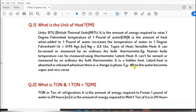Types of heat: Sensible heat can be sensed or measured by an ordinary dry bulb thermometer, for example, human body temperature can be measured using thermometer. Latent heat can't be sensed or measured by an ordinary dry bulb thermometer. It is a hidden heat. Latent heat is absorbed or released whenever there is a change in phase, for example, when the water becomes vapor and vice versa.